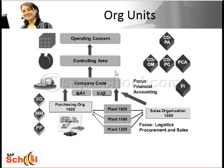Here is a quick look at the org structure and the key org units that make up management accounting. At the top you have the operating concern, which represents the structure of external market segments for the enterprise. Then you have the controlling area, which is the basic organizational unit in management accounting. A controlling area is a closed entity used for cost accounting. You can allocate costs only within a controlling area, and these allocations cannot affect objects in other controlling areas.